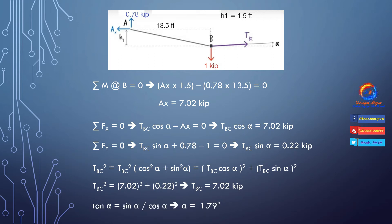For angle determination, we know that tan(alpha) = sin(alpha) / cos(alpha). Dividing TBC × sin(alpha) by TBC × cos(alpha), alpha equals 1.79 degrees.